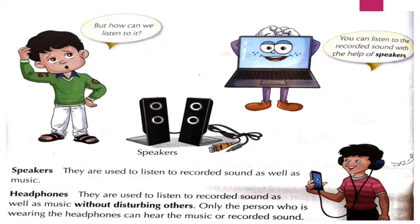Headphones are those which we wear on our head and we cover our ears with the band which comes with the headphone so that others don't get disturbed. They are used to listen to recorded sound as well as music without disturbing others. Only the person who is wearing the headphones can hear the music or recorded sound.